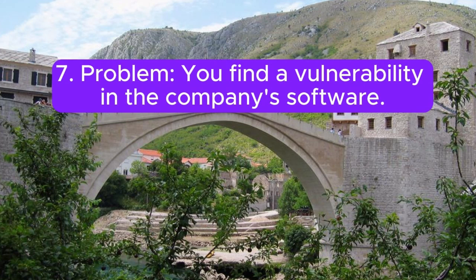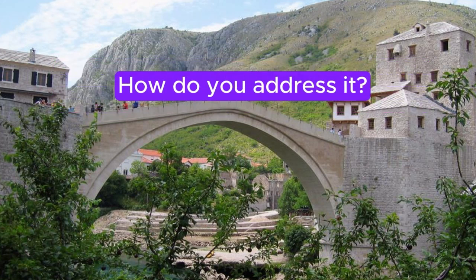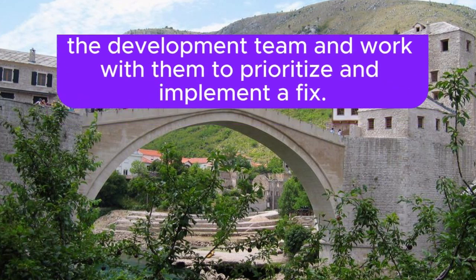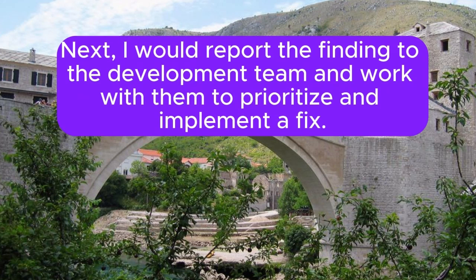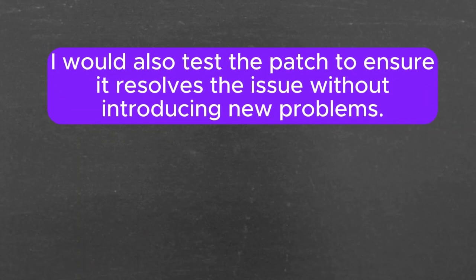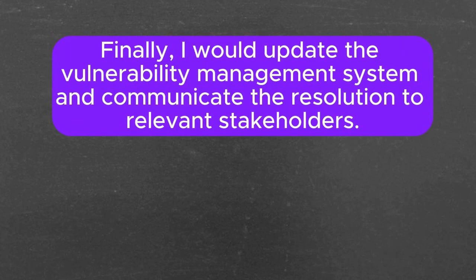Problem 7: You find a vulnerability in the company's software. How do you address it? I would document the vulnerability and assess its potential impact. Next, I would report the finding to the development team and work with them to prioritize and implement a fix. I would also test the patch to ensure that it resolves the issue without introducing new problems. Finally, I would update the vulnerability management system and communicate the resolution to relevant stakeholders.